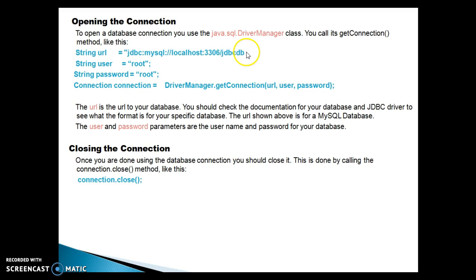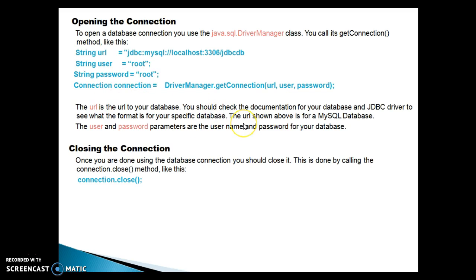Finally I have given slash jdbc, which is the schema name you need to create on the MySQL server. The username is the database username and password is the database password — whatever password you gave while installing MySQL, the same password you specify here. Once you know the database URL, username, and password, you pass these three parameters to the getConnection() method: first the URL, second the username, and third the database password, and you will get the connection object. You should check the documentation for your database and JDBC driver to see what the URL format is for your specific database and what the driver class name is.